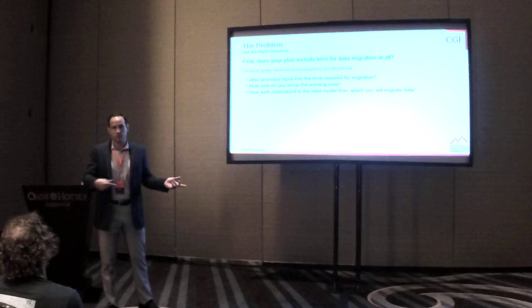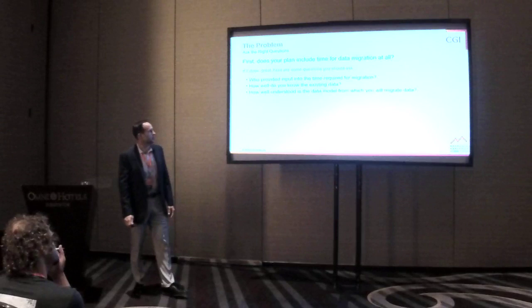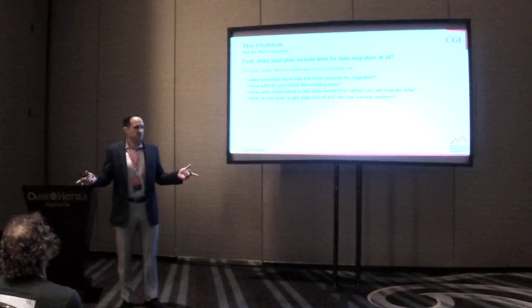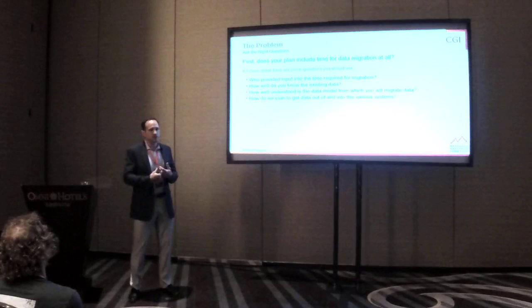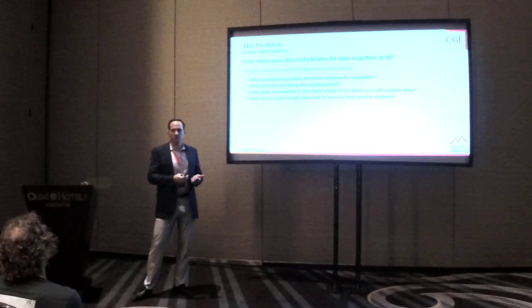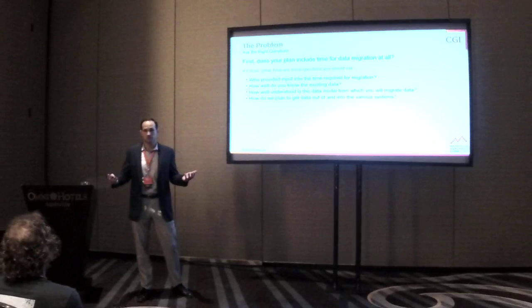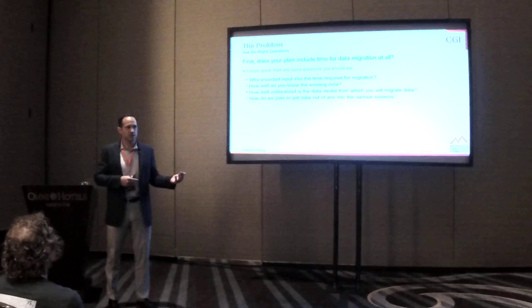How well understood is the data model from which you're going to migrate? How has the data evolved over time? I've heard stories where a field, up until five years ago, was used to represent one value, and then it changed to mean something totally different. If you're just the DBA who did a quick look at the database, you couldn't infer from that what it means to the business. Also, how do you plan to get the data into and out of various systems? It's common to see new systems force you to go through an API to insert data, because business rules won't be validated otherwise.